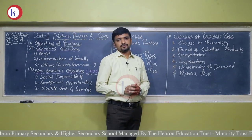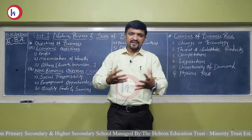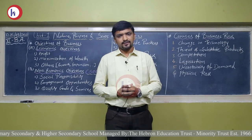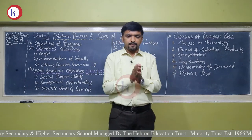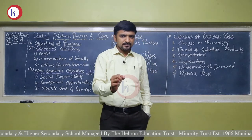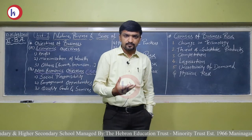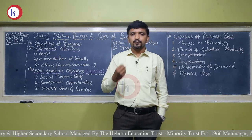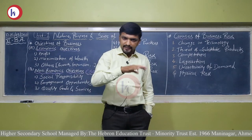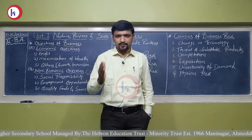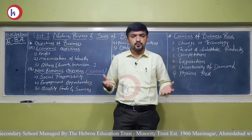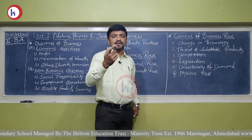Number four is legislation — that is, government control. Examples include the Factory Act, Minimum Wages Act, and any safety or remuneration act. Any act passed by the government has a strong impact on business. For example, after issues with China, the Indian government stopped imports of various Chinese products, causing serious trouble for businessmen who were importing and supplying Chinese products across India.